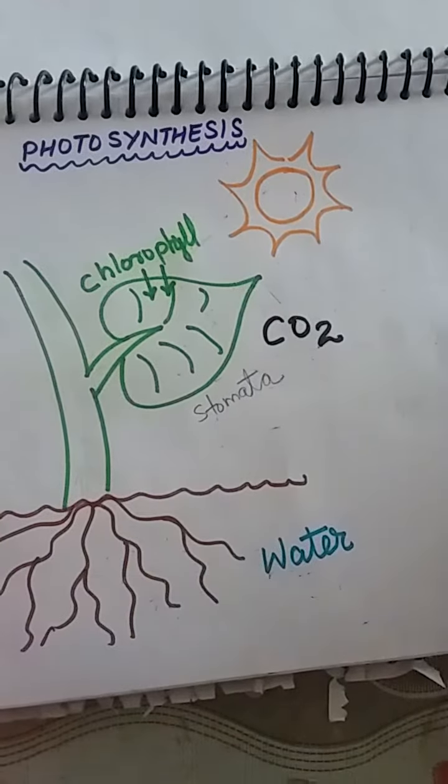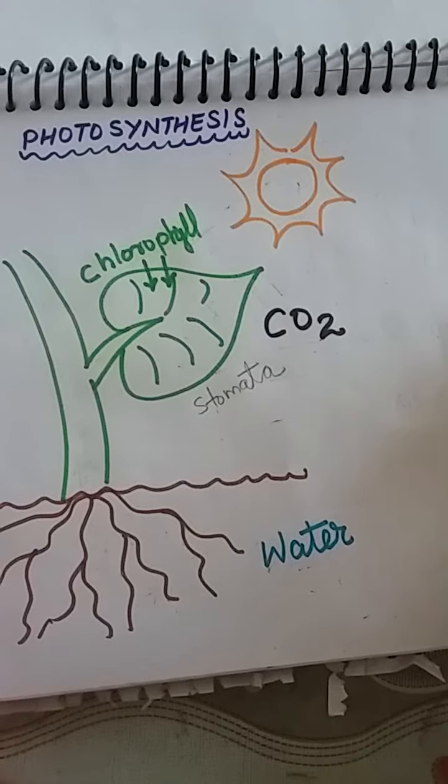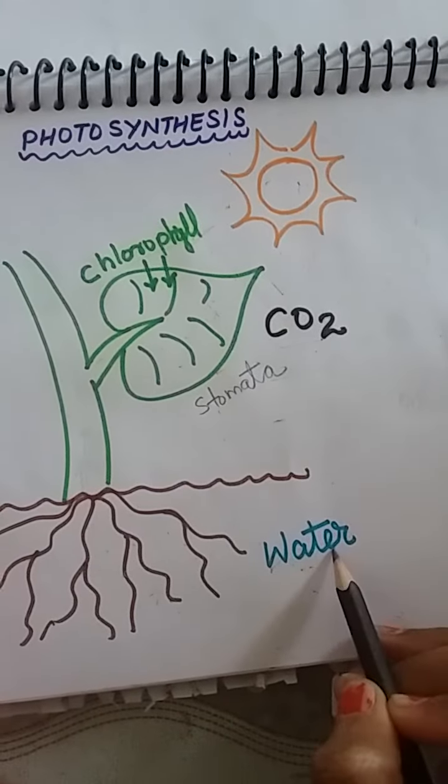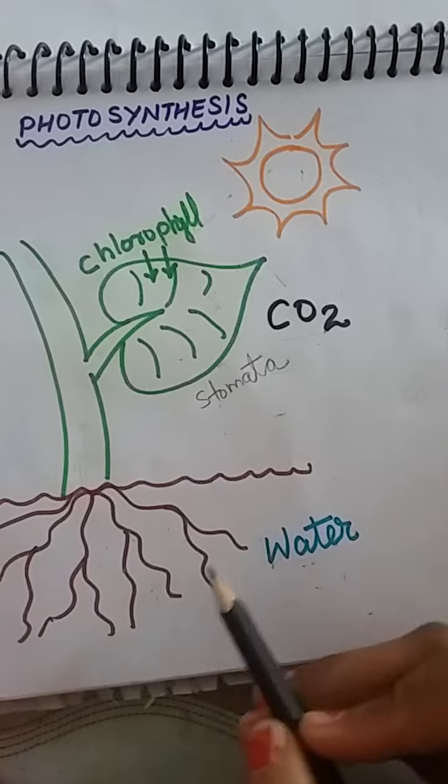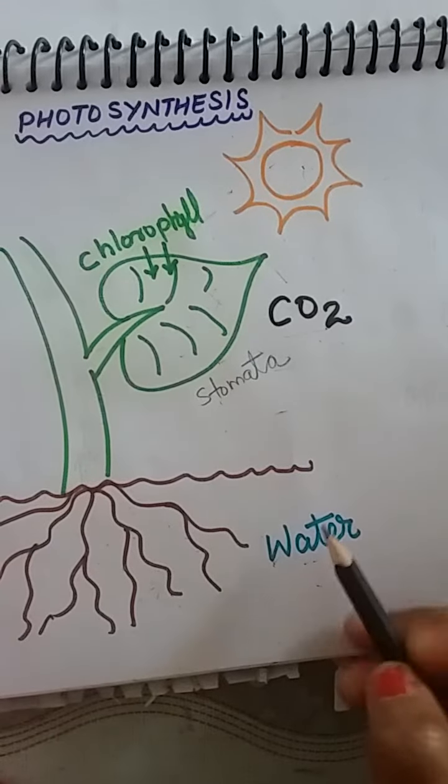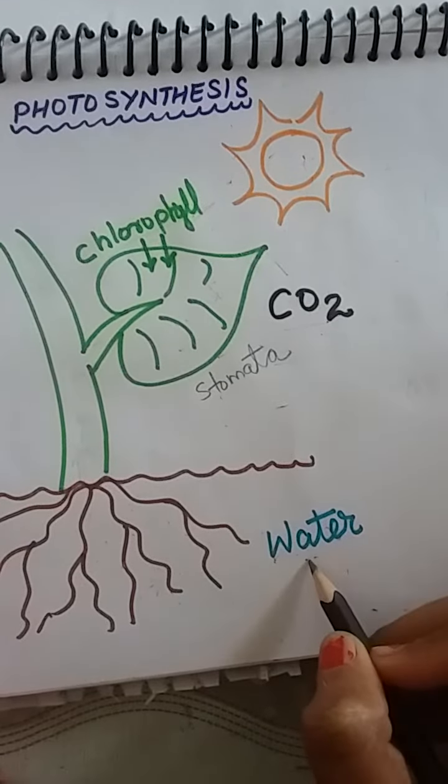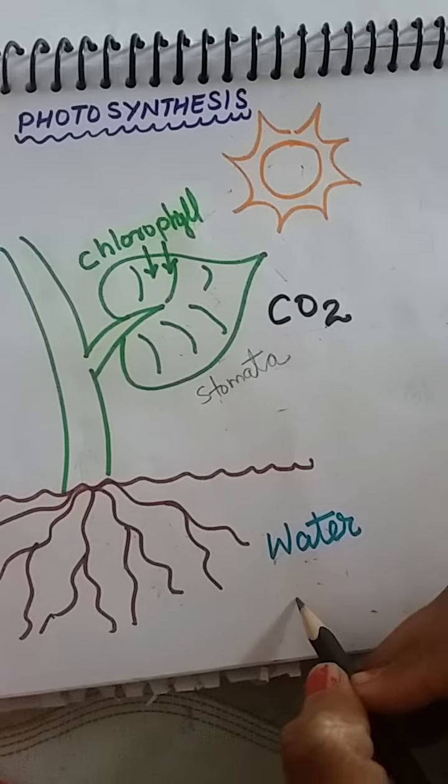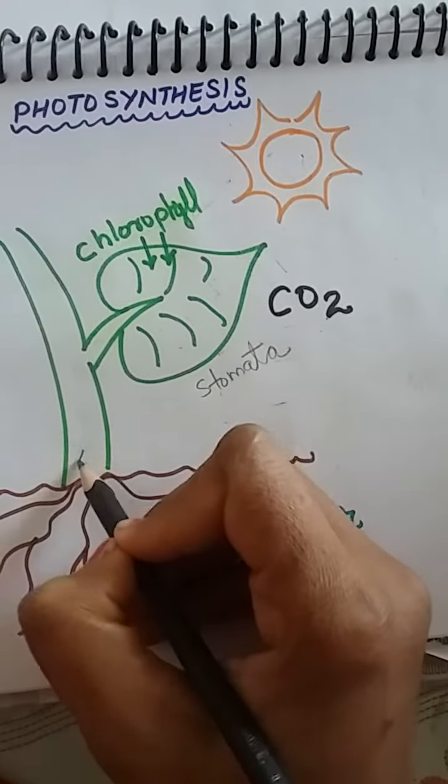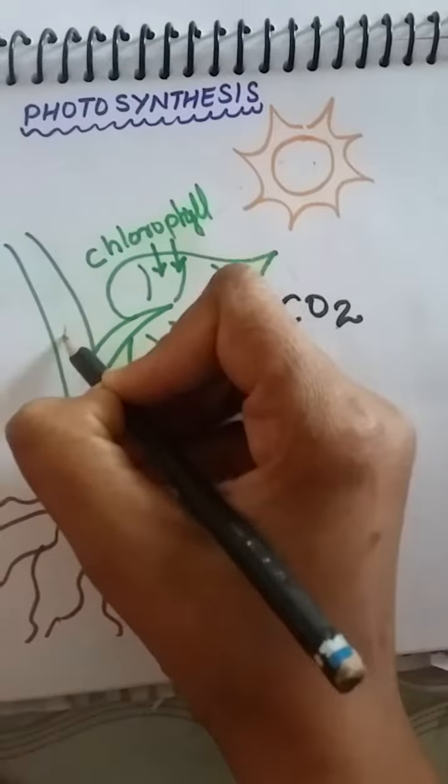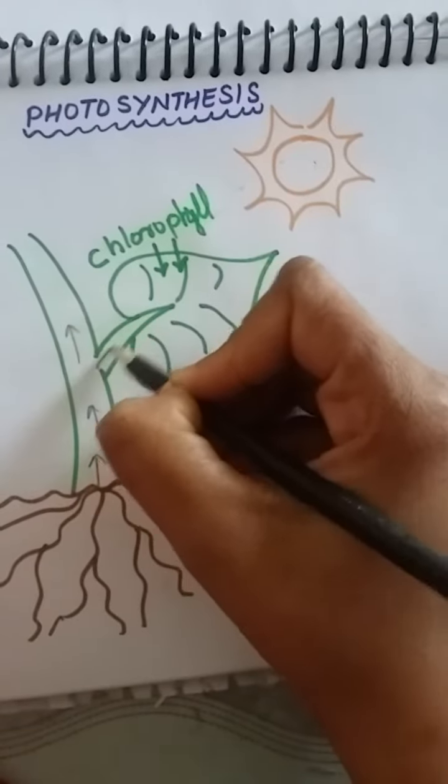And where do the green plants get water from? Yes, they get water from the roots. Roots trap the water. This is the primary function of a root: to hold the water in it and supply it to the other parts of the plant.